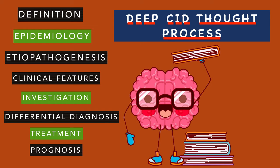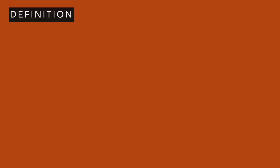This mnemonic — Deep CID Thought Process — will help you remember the framework. Let us now move on to understand each heading and what you should be writing under it. The first one is definition. Under definition, the first thing you will do before writing the definition is classify the disease.